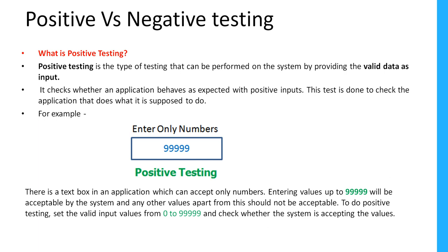Hello everyone, welcome. This is Pawan. In this video I'm going to discuss positive versus negative testing. Positive testing is a type of testing performed on the system by providing valid data as an input. If I test an application with valid data, that comes under positive testing, and if I test an application with invalid data, that comes under negative testing.